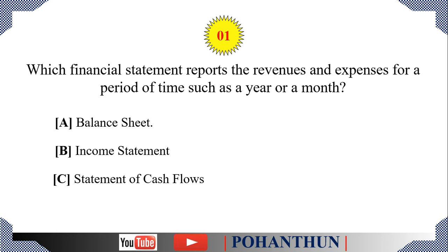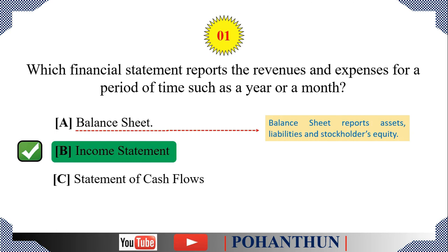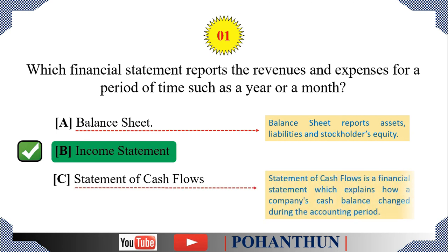The right answer is Option B, income statement. Balance sheet reports assets, liabilities, and stockholders' equity, whereas the statement of cash flows is a financial statement which explains how a company's cash balance changed during the accounting period.